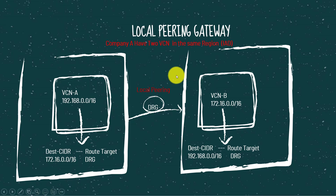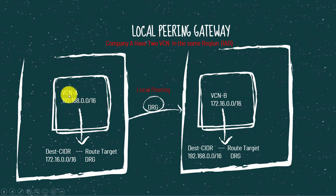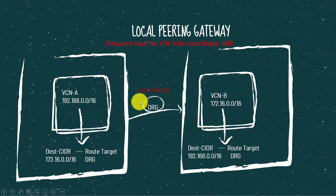This picture gives you a clear idea of how it's going to connect. We have a Company A tenancy and it has two VCNs: VCN A and VCN B. The connectivity goes via the DRG. Before we establish the connection, we need to update the route table of each VCN to enable the connectivity.